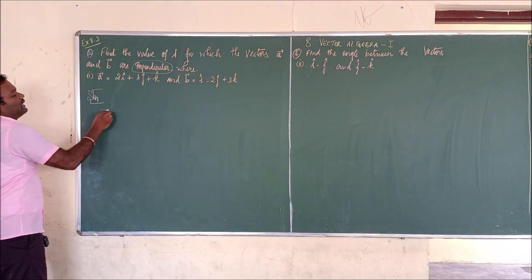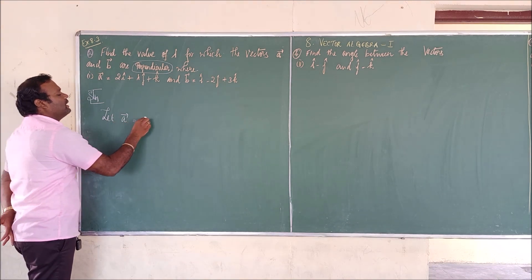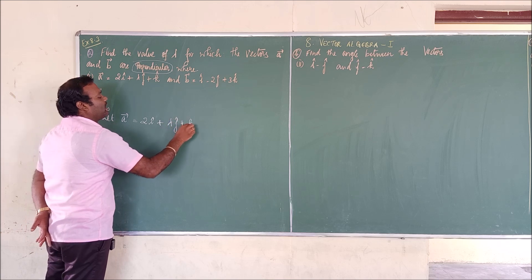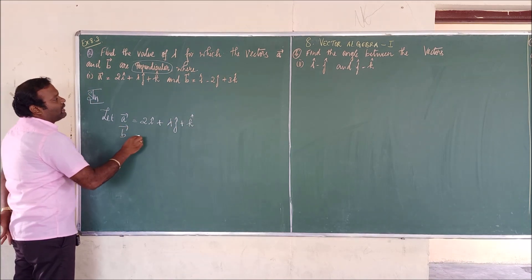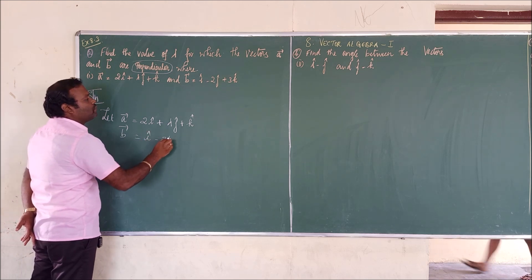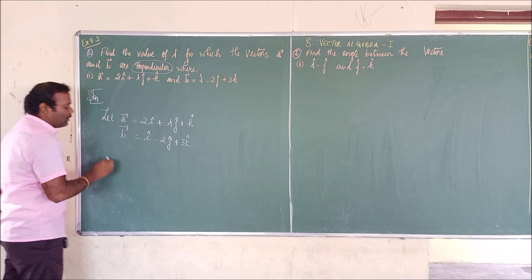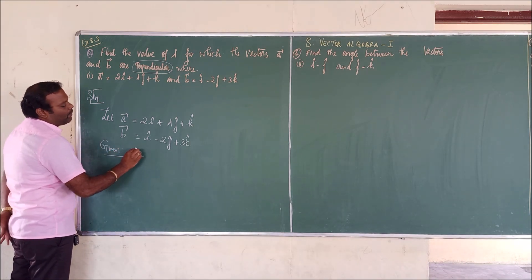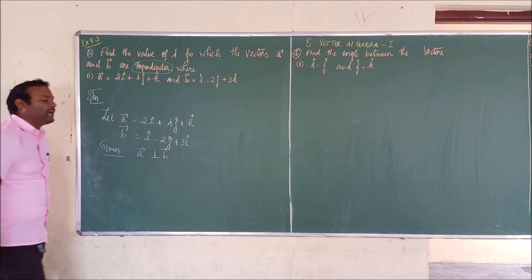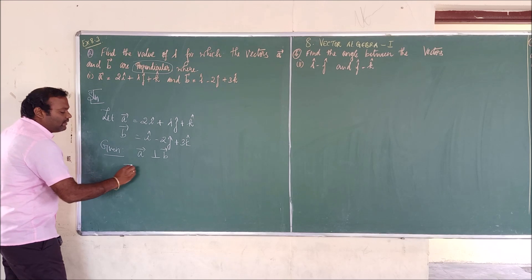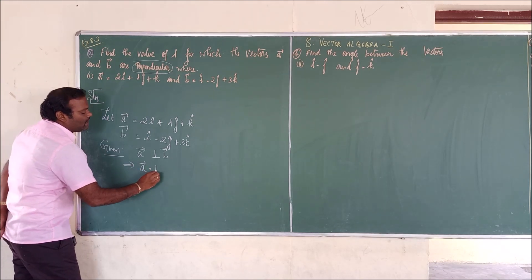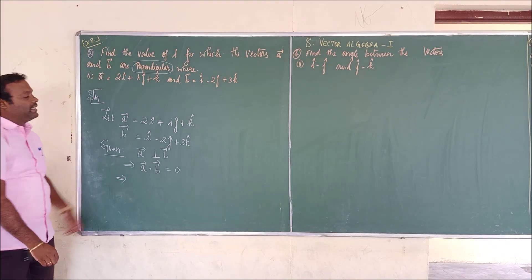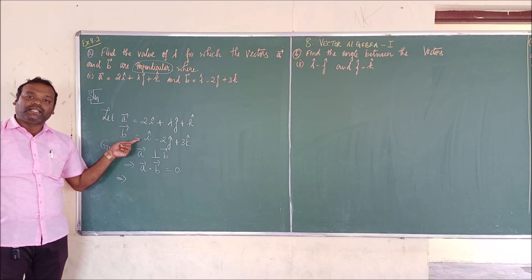Let a vector equal 2i cap plus lambda j cap plus k cap, and b vector equal i cap minus 2j cap plus 3k cap. The given condition is that a vector is perpendicular to b vector. From this we can write that a vector dot b vector is equal to zero. Now we are going to compute that dot product.